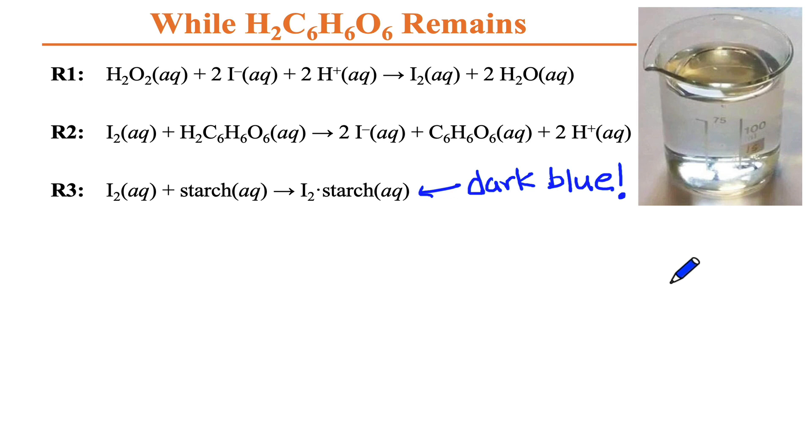However, that dark blue color is not observed as the reaction is occurring. This is because R2, the reaction of I2 with ascorbic acid, is much faster than the reaction of I2 with starch in R3. So while there is ascorbic acid around, R2 is running instead of R3. Iodine has no time to engage with starch. It reacts with ascorbic acid much more quickly.